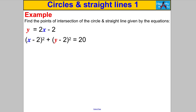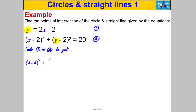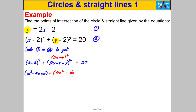Find the points of intersection of the circle and straight line given by the equations. Let's solve these simultaneously — label equation one and equation two. Equation one is in the form Y = MX + C, so we substitute equation one for Y into equation two, replacing Y with 2x − 2. Substituting: (x − 2)² + (2x − 2 − 2)² = 20. Expanding (x − 2)² gives x² − 4x + 4, and (2x − 4)² gives 4x² − 16x + 16.